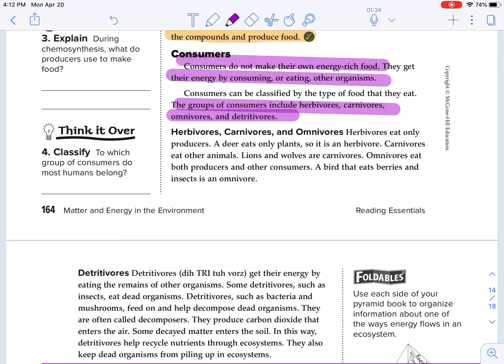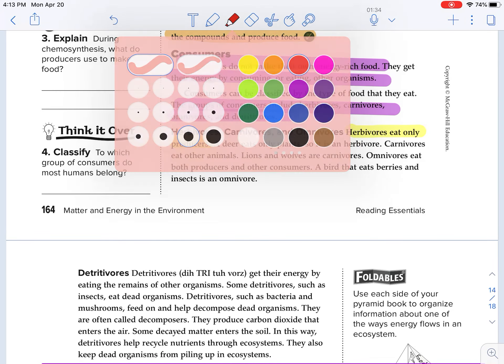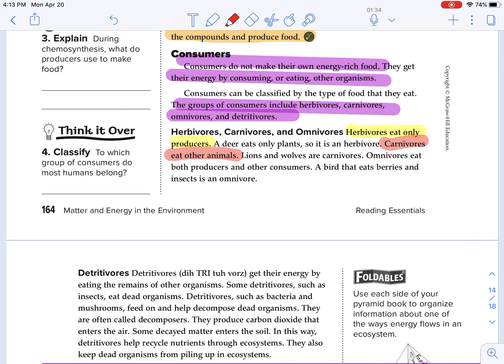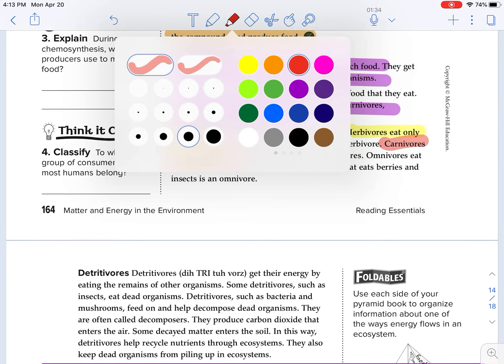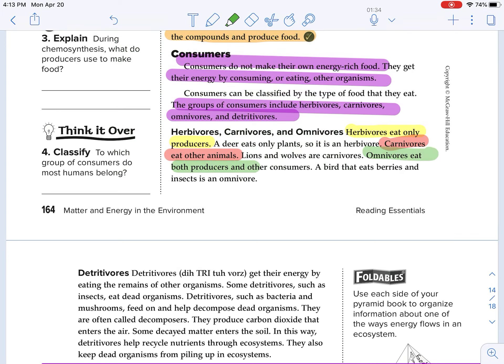Herbivores, carnivores, and omnivores. Herbivores eat only producers. A deer eats only plants, so it is an herbivore. A rabbit is an herbivore. Carnivores eat other animals. Lions and wolves are carnivores. Omnivores eat both producers and other consumers. A bird that eats berries and insects is an omnivore. A bear is an omnivore.